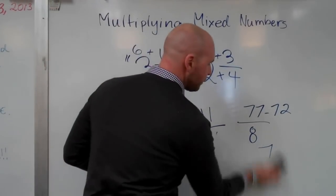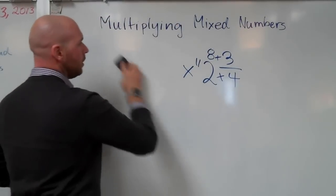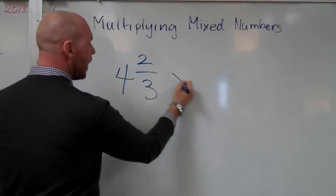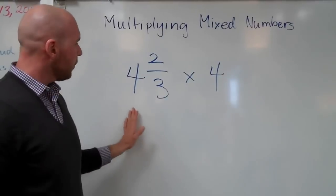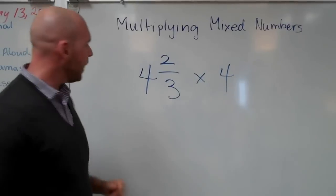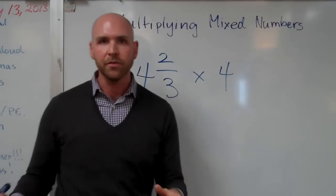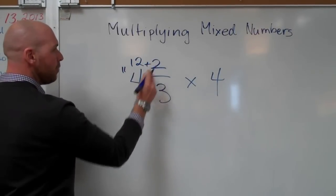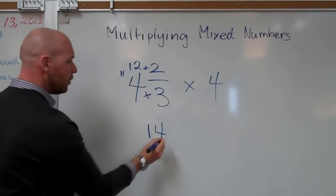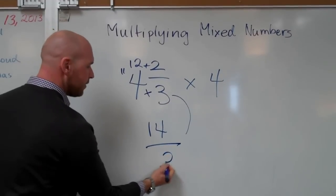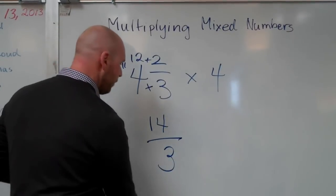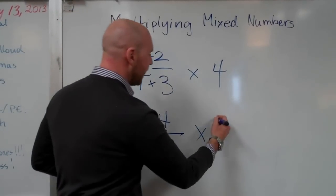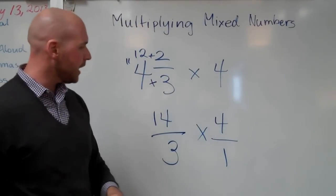Let's try another one. You might find one such as this: four and two-thirds times four. In this case you have a mixed number times a whole number. I still need two improper fractions. So I start here: three times four equals twelve, twelve plus two is fourteen — that's my new numerator. My denominator stays the same, it's three. And what do I do with the whole number? All I do is put a one underneath — four over one.